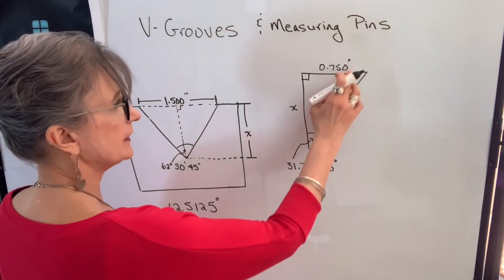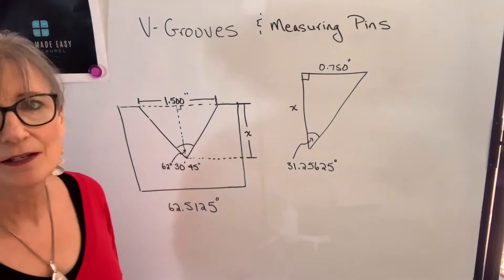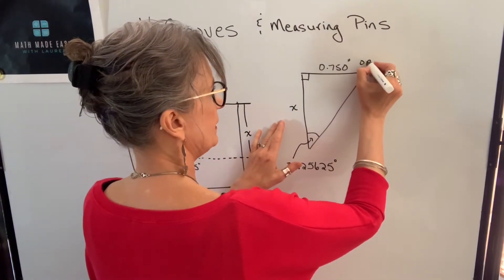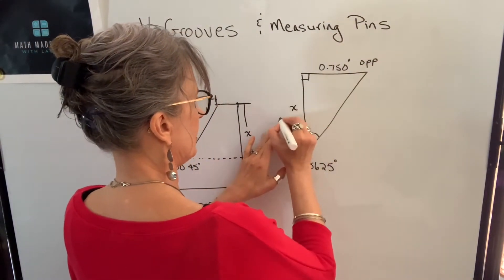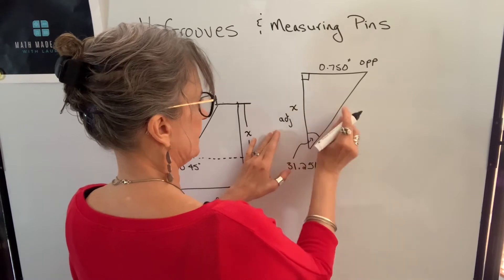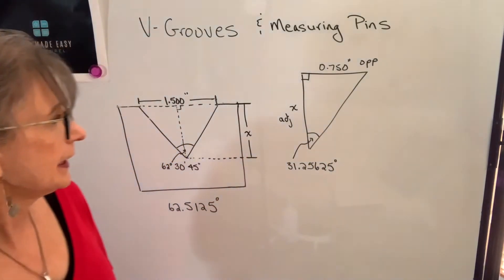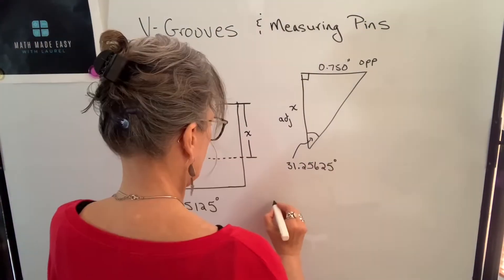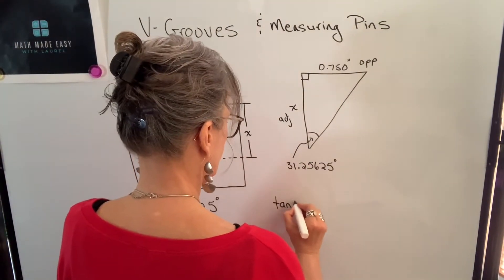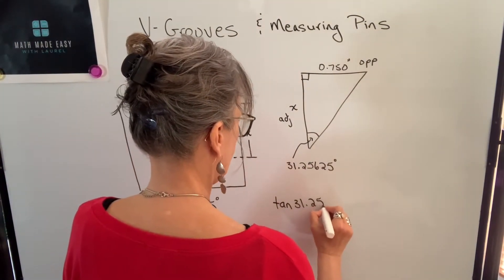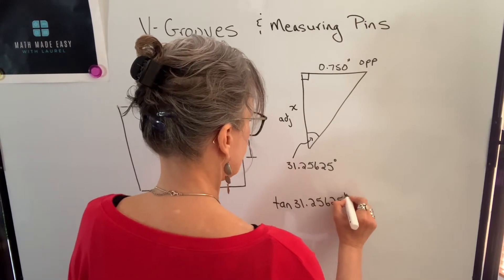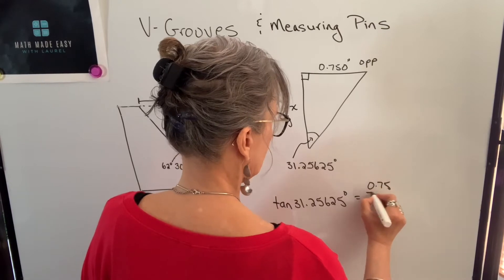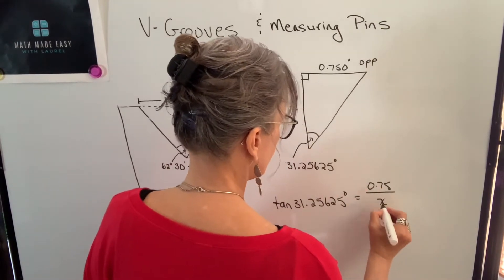Now that I have this angle and this side, I can find x. I'm going to name my sides: this is the opposite side to this angle, this is the adjacent side to this angle, and this is the hypotenuse — but I don't need it. The trig function that uses opposite and adjacent is the tangent function. So the tangent of 31.25625 degrees will equal the side opposite, which is 0.75, over the adjacent side, which is x.